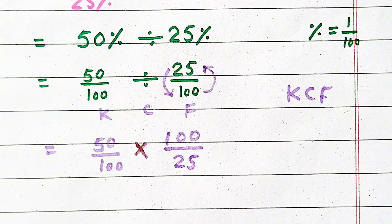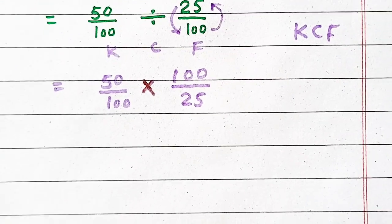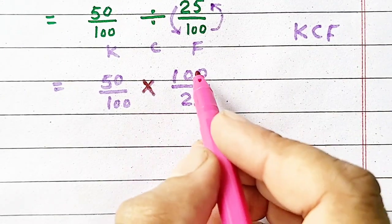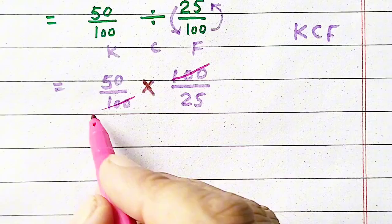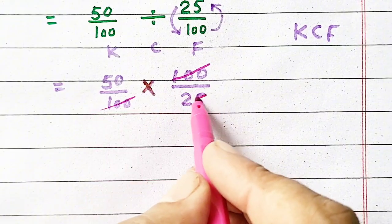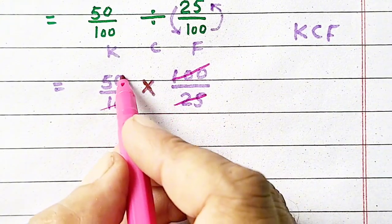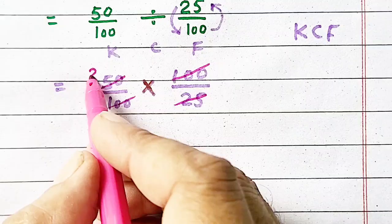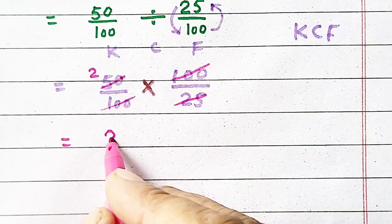Now, if we make cancellation, then 100 is cancelled with 100, and 25 and 50 are cancelled, so our answer will be 2.